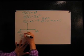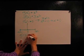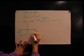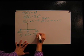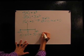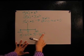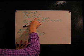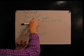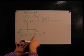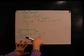g prime negative 100 equal to 3 negative 100 squared. This line came from our prime function. Once we got our power rule, 3x squared, we plug negative 100 into that for our x.